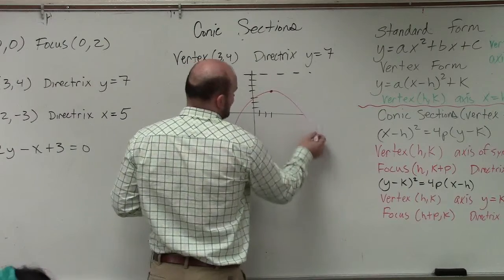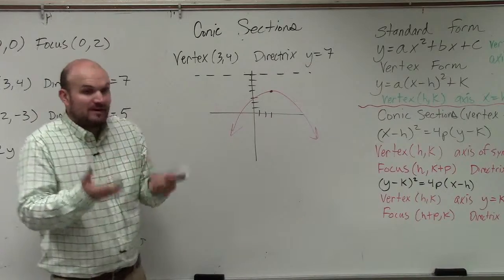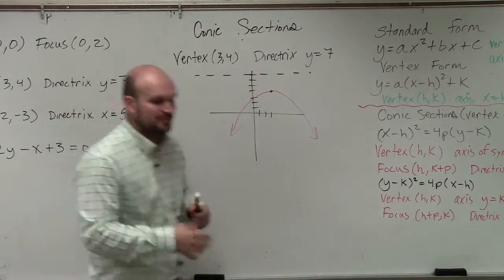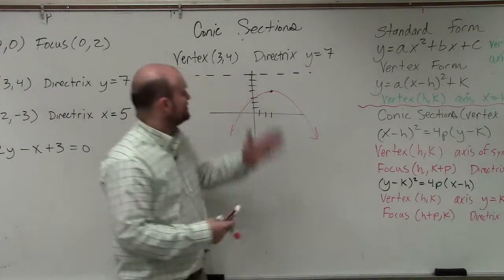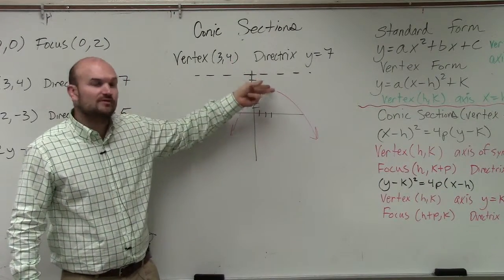So my graph is going to be opening down. I don't know what the graph looks like, but I'm just going to sketch the parabola. So I know it's going to be opening down. Now, the main important thing is I want to find my focus. I need to find the value of p. Remember, the distance between the vertex and the directrix is equal to the distance of the vertex to the focus.